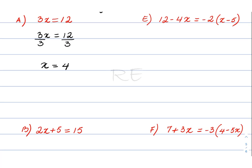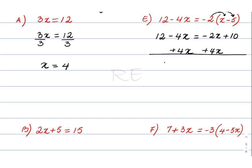For question E, we leave the left side alone: 12 minus 4x is equal to negative 2 times (x minus 5). We distribute: negative 2 times x gives negative 2x, and negative 2 times negative 5 gives positive 10. Then we transpose 4x to the right side by adding 4x on both sides, giving 12 is equal to 2x plus 10.